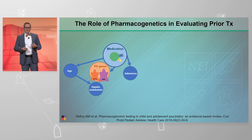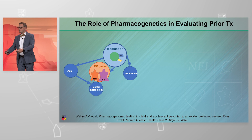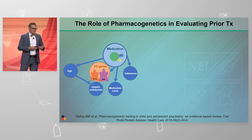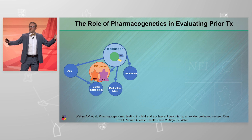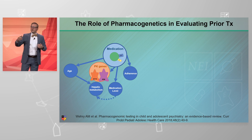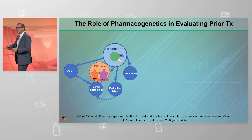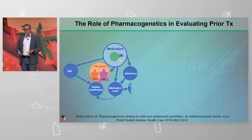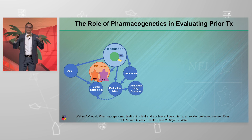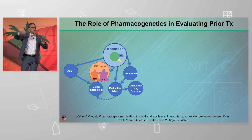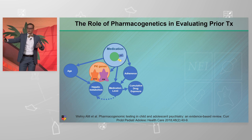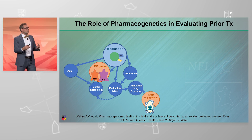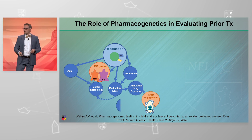Beyond that, we know that age influences metabolism. We know that medication dose is related to medication level. And we know that medication level, for some medications, can actually influence its own metabolism. We know that adherence affects medication level. And then we know that exposure — concentration over time is what I mean by exposure — is going to produce differences in terms of target engagement. That's where the rubber's meeting the road.